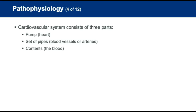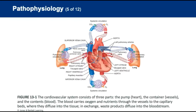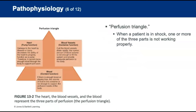The cardiovascular system consists of three parts: the pump, the container, and the contents — that is, the heart, the blood vessels, and the blood. These three parts can be referred to as the perfusion triangle. When a patient is in shock, one or more of these three parts is not working properly.